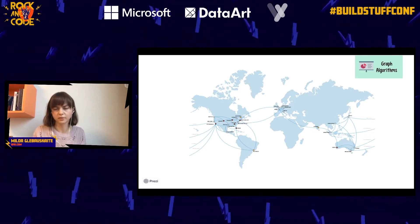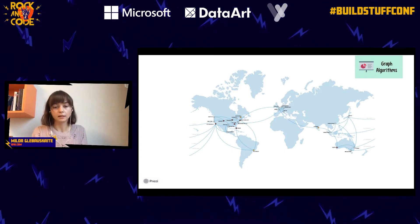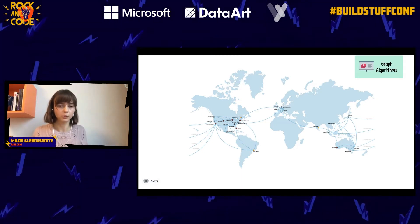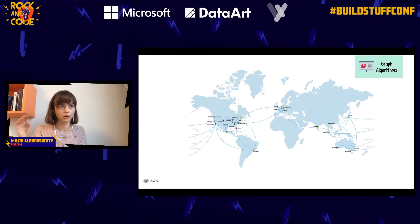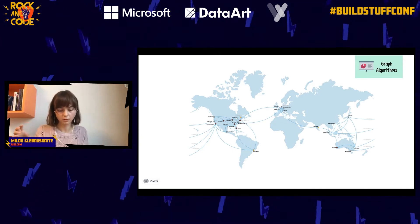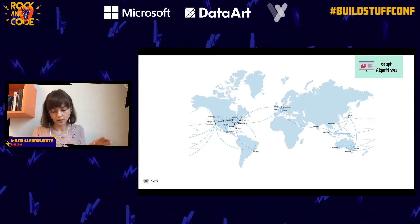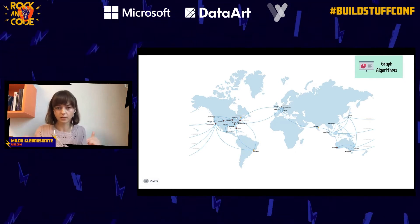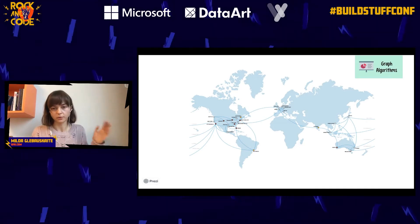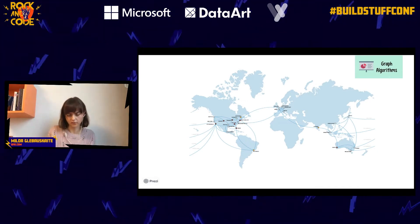A more interesting problem: a network company with 75,000 instances across the world wanted to update them regularly. They couldn't do it one by one (too slow), and they couldn't shut everything down because some instances always had to be up. By marking instances as graph nodes — connected if they can't be shut down simultaneously — and colors as update batches, they were able to restart the infrastructure very efficiently without ever losing service. They restarted it in just eight batches.